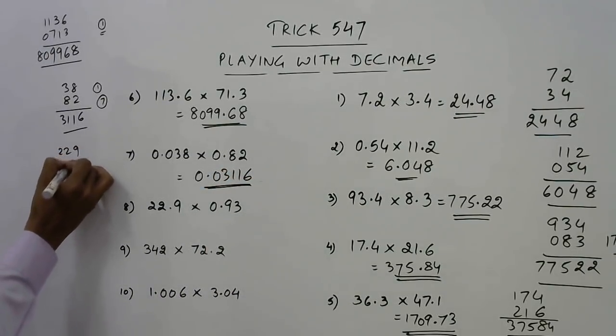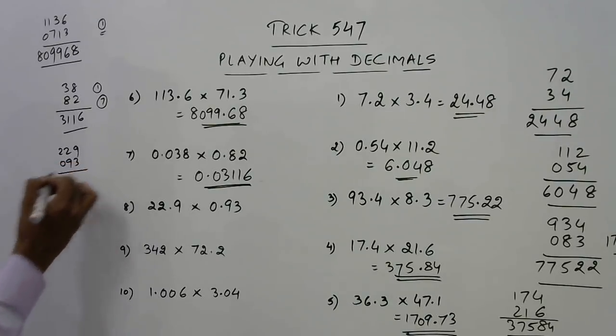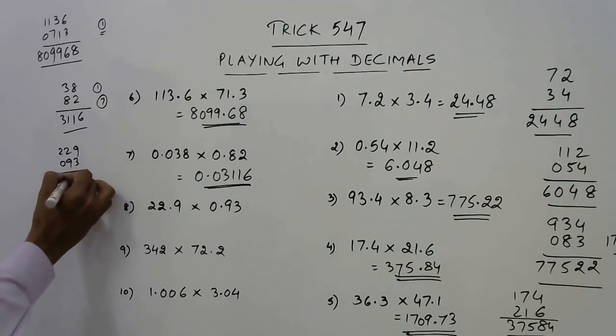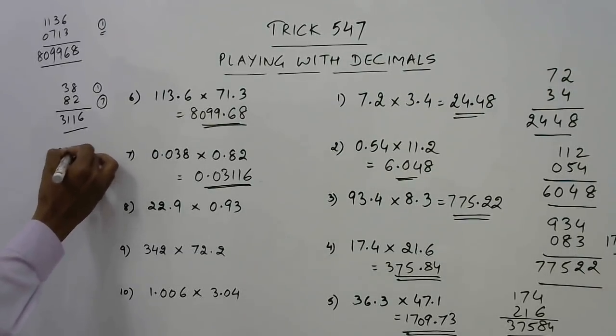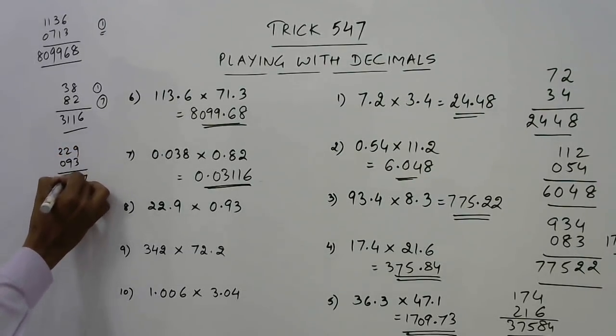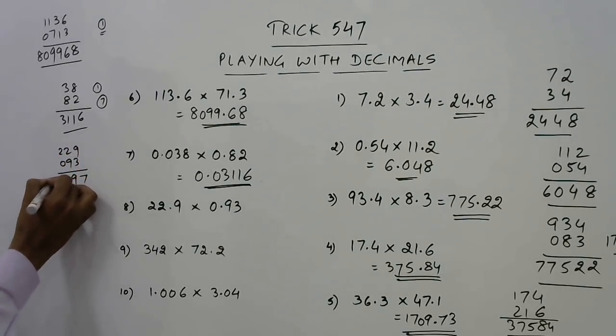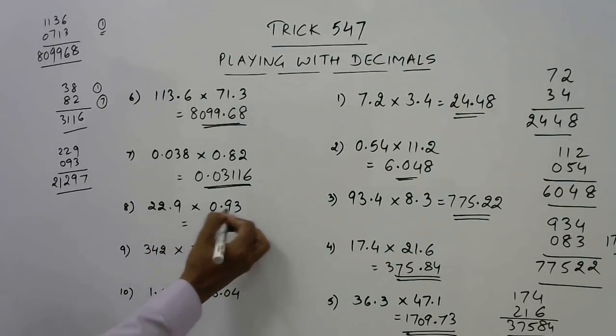The product is 21297. So your answer will be 1, 2, 3, so 21.297.